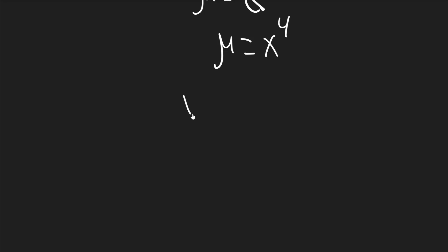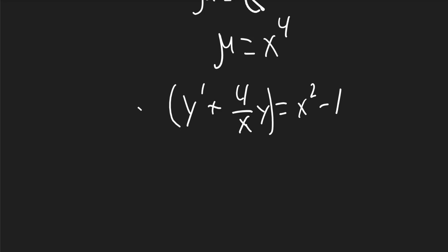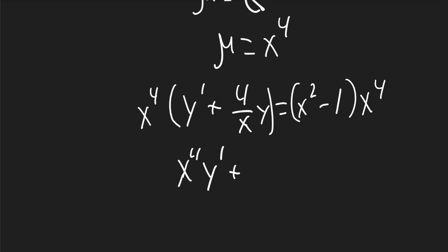Our equation in proper form is y prime plus 4 over x times y equals x squared minus 1. We'll now multiply all terms by mu, which is x to the 4th. On the left, it becomes x to the 4th times y prime plus 4x cubed times y.